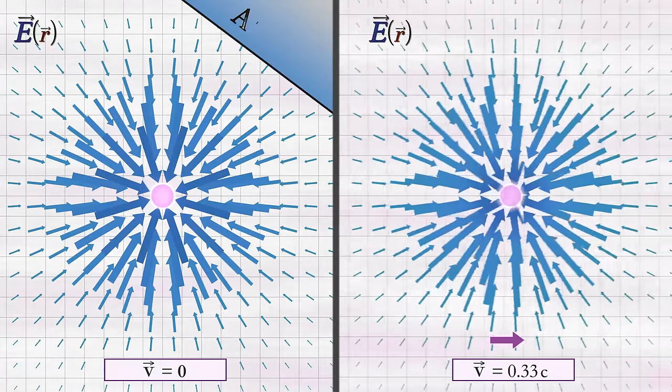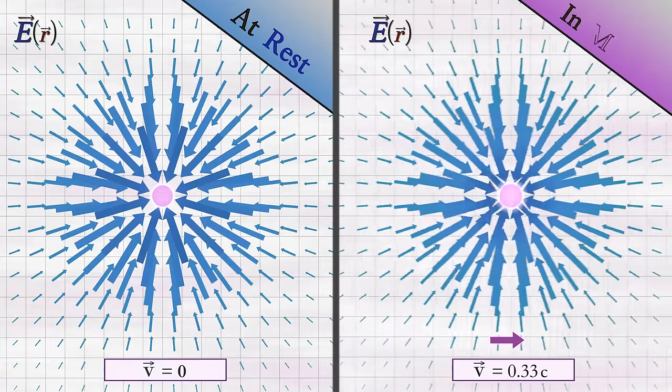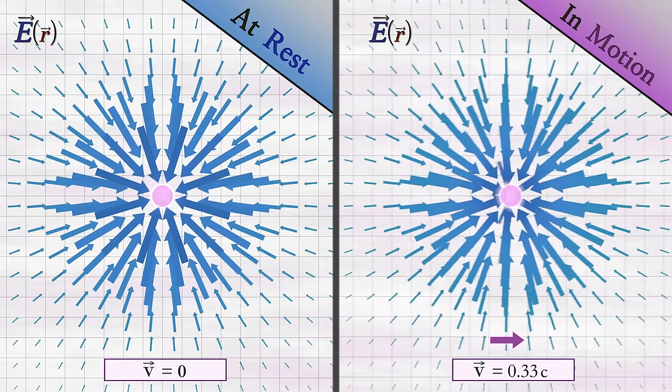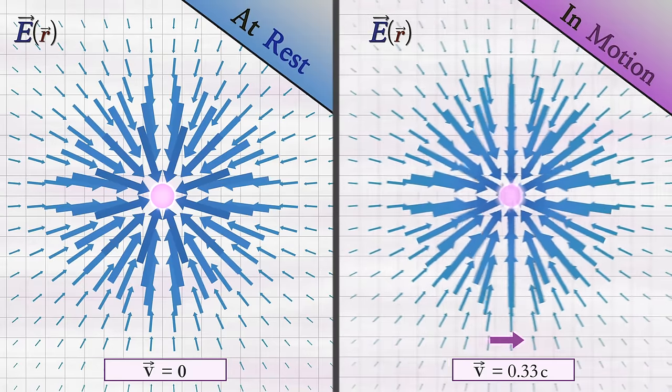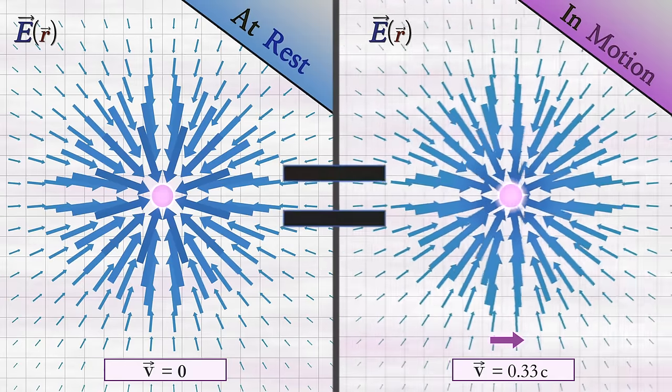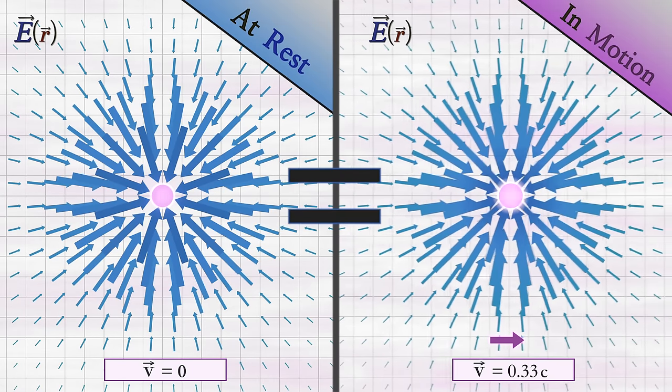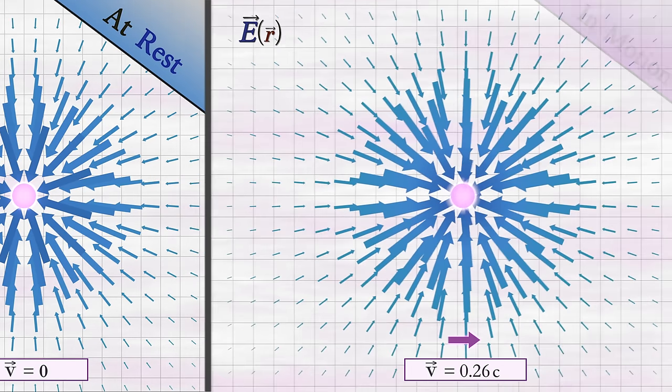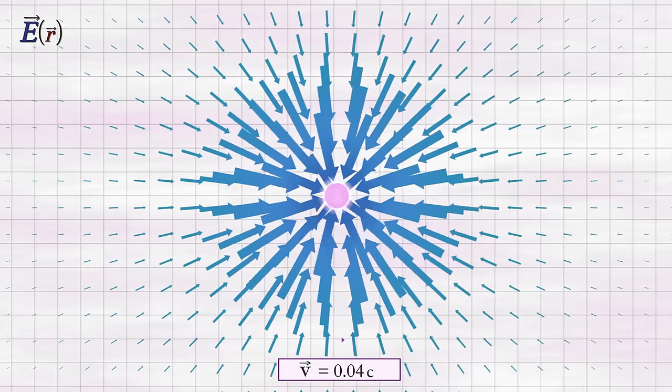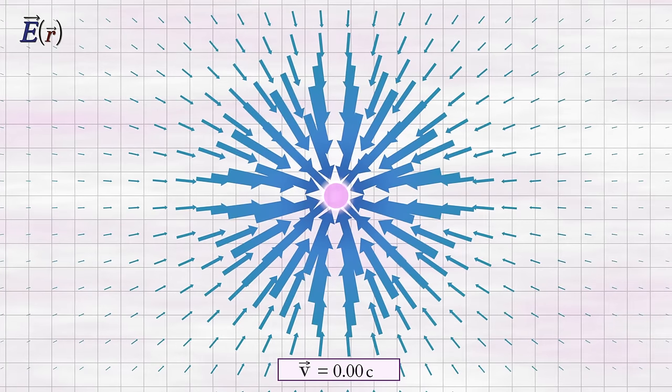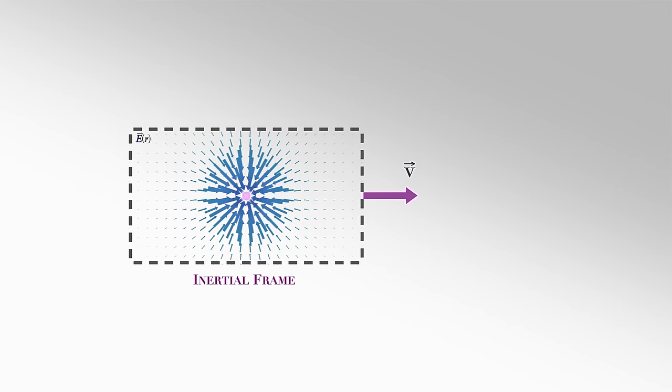This strange fact is often cited as proof of the postulate of relativity. That is, the assertion that there is no physical difference between a frame at rest and a frame in uniform motion. Indeed, it's argued that if we transform into the moving charge's frame, we can treat both the charge and its field as being at rest. Therefore, the field and charge must always remain synchronized for any inertial movement.